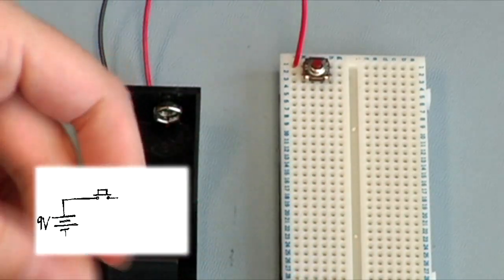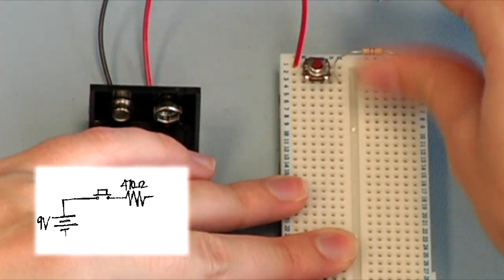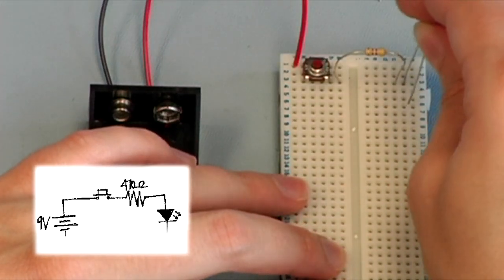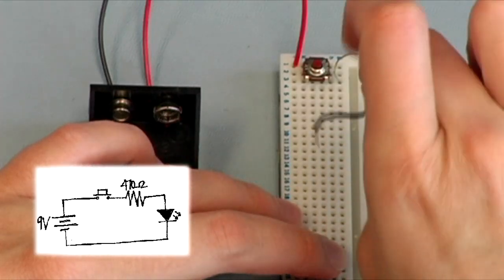The next piece of our schematic connects one end of the resistor to the other lead of the push button, like so. Then the other end of the resistor connects to the positive lead of the LED, and the negative lead of the LED connects to the negative terminal of the battery.